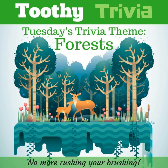Today's trivia theme is forests. There are three main types of forests on planet Earth. They are called tropical forests, temperate forests, and boreal forests.